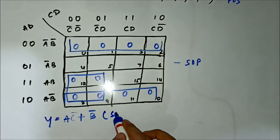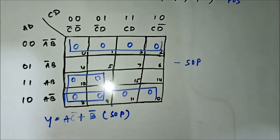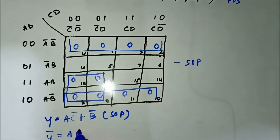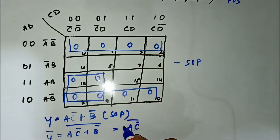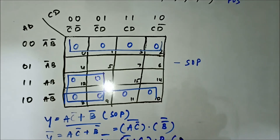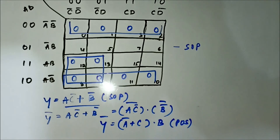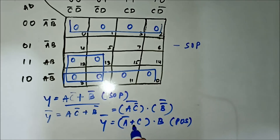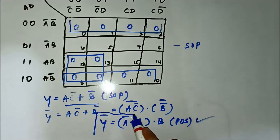For the quad involving cells 8, 9, 12, 13: in the horizontal side we have A common, and in the vertical side we have C-bar common. For the octet involving cells 0, 1, 2, 3, 8, 9, 11, 12: in the horizontal side we have B-bar common; nothing is common in the vertical side. Taking the complement and applying De Morgan's theorem to AC-bar + B-bar, the required POS expression is (A-bar + C) · B.